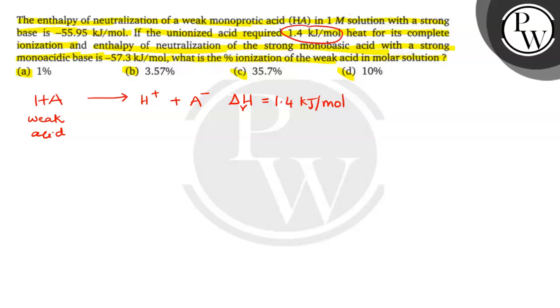Here, 1.4 kilojoules. And next one is delta H neutralization. Delta H neutralization is equal to delta H ionization plus delta H of the reaction.